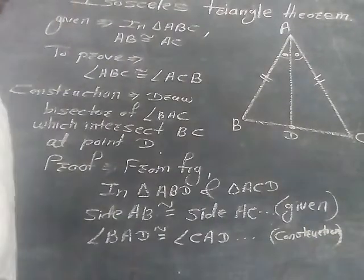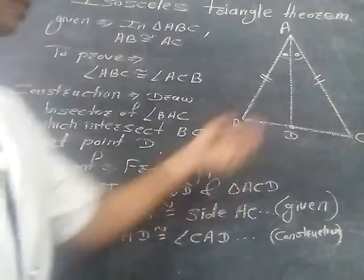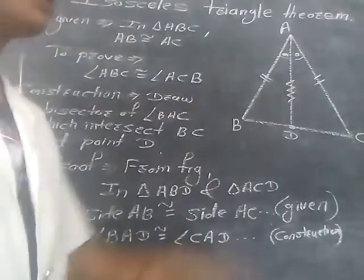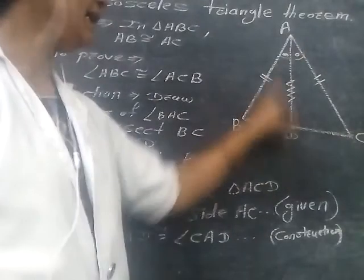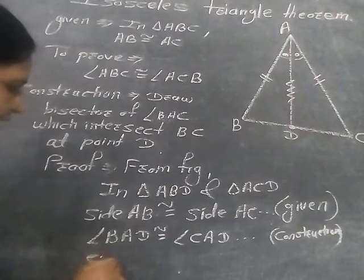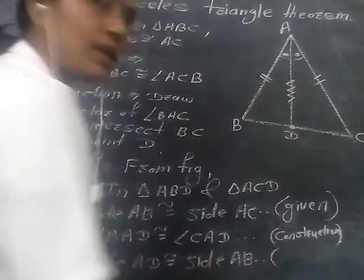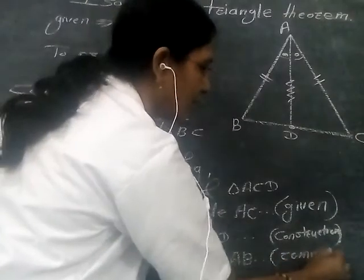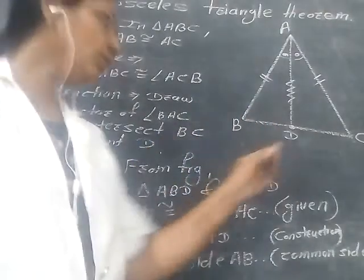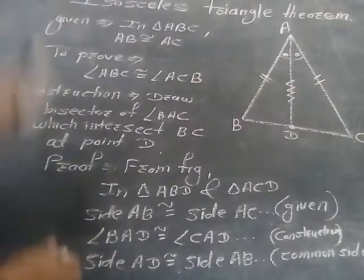Now, again, if we want to prove that these two triangles are congruent, one more thing is necessary. If we observe these two triangles, AD is the common side — AD is present in triangle ABD and AD is present in triangle ACD. So we can write here: side AD is congruent to side AD. The reason is that it is a common side.